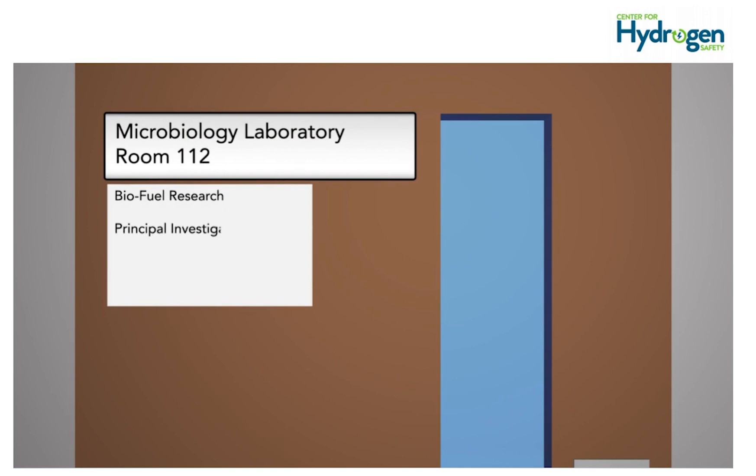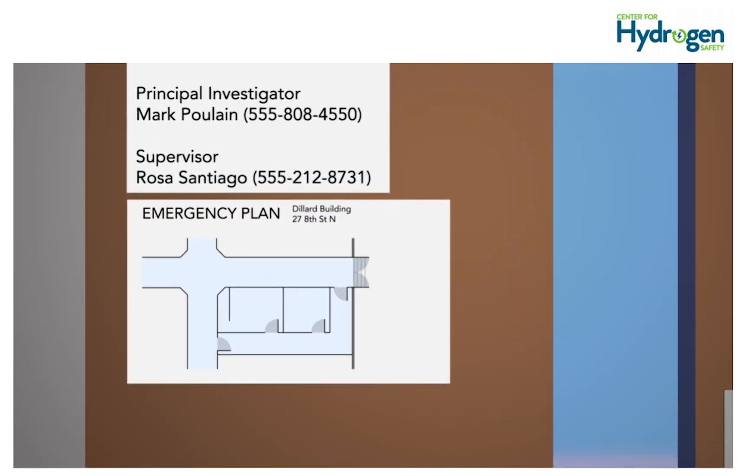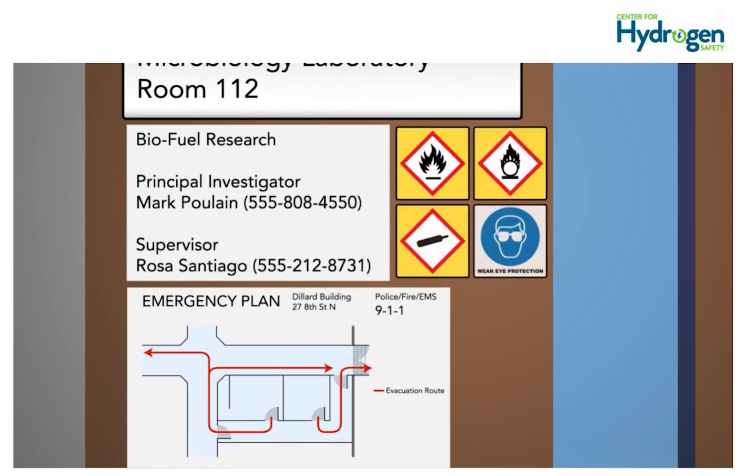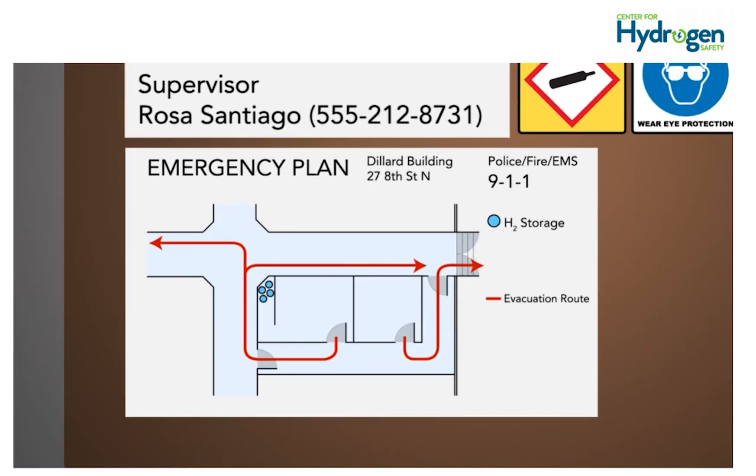The names of all principal contacts such as the principal investigator or supervisor along with their contact information; the name and address of the building; emergency response and call information as well as multiple emergency evacuation routes; identification of all hazards present in the workspace; and a map showing the location of hydrogen storage as well as the primary and secondary gas shutoffs.